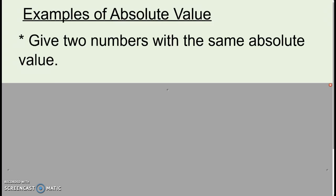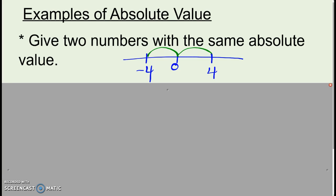Next on your sheet, we're going to do some examples of absolute value — two numbers with the same absolute value. Remember, absolute value means distance away from zero. If I want to think about two things the same distance from zero, an example would be positive four and negative four, because they're both four away from zero. Basically any pair of a number and its opposite have the same absolute value. The absolute value of 4 is 4, and the absolute value of negative 4 is also 4.